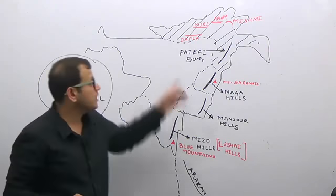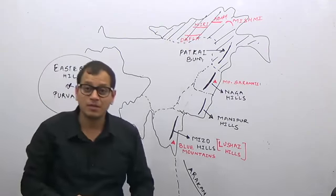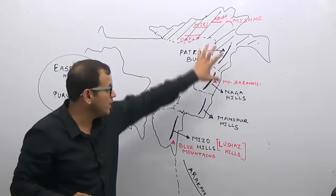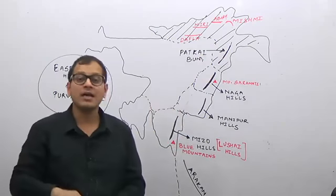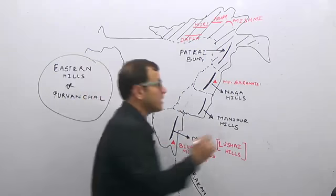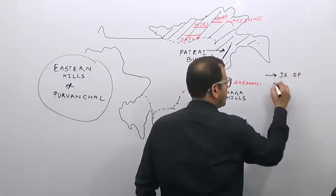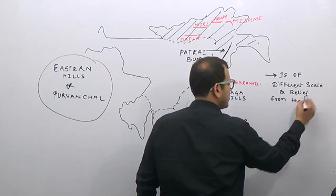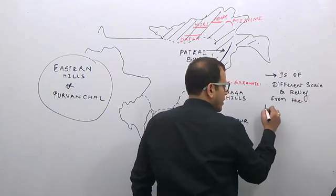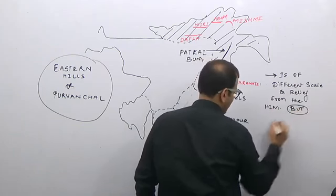Don't confuse these. Dafla, Miri, Abhor, and Mishmi are part of the Shivalik. After that, the Himalayas turn southward, continue as the Eastern Hill Complex, then go below the sea and rise as the peaks of the Andaman and Nicobar Islands. Remember, the Eastern Hill Complex is of a different scale and relief from the main Himalayas, but they belong to the same origin.